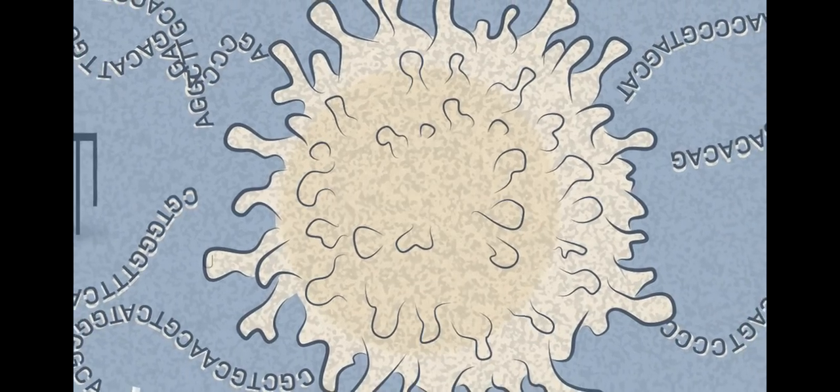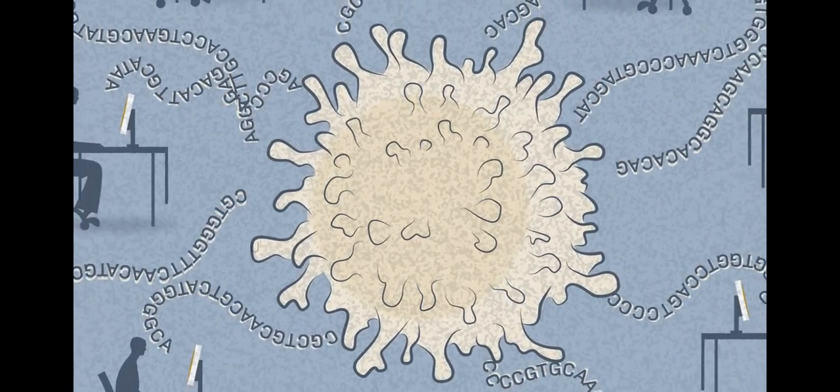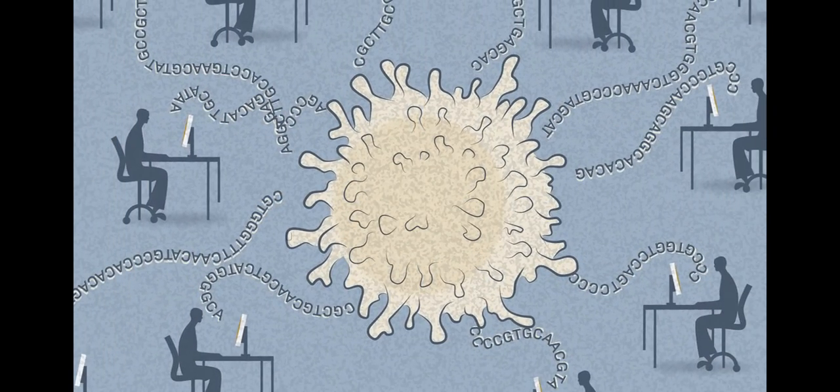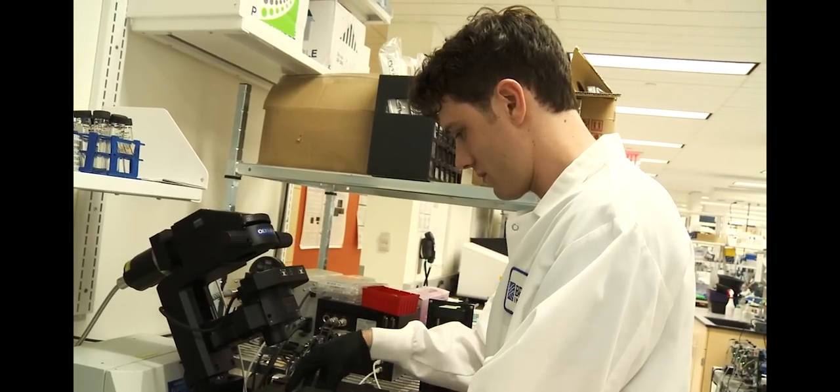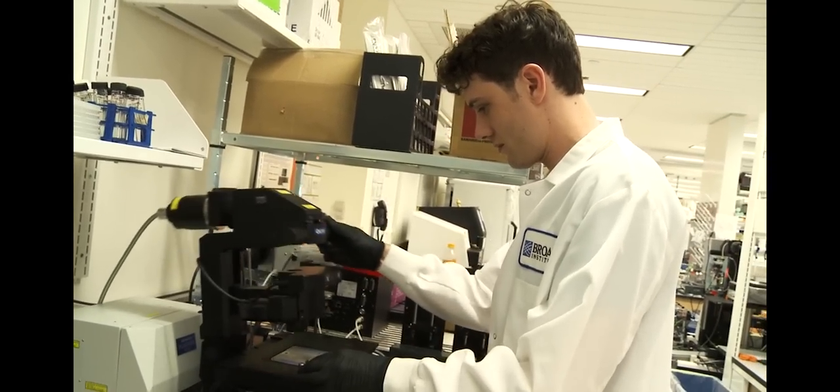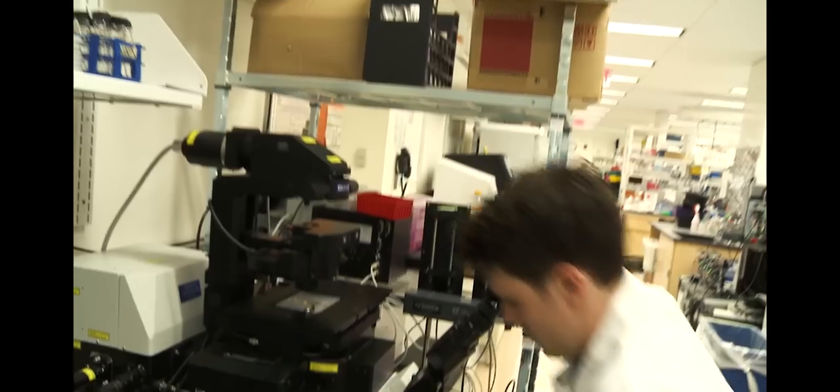Single-cell RNA-seq allowed us to look at single cells but then at a genome-wide scale. Previously what you could do at the single-cell level was look at maybe a handful of markers, but you would have to know which genes you wanted to detect.